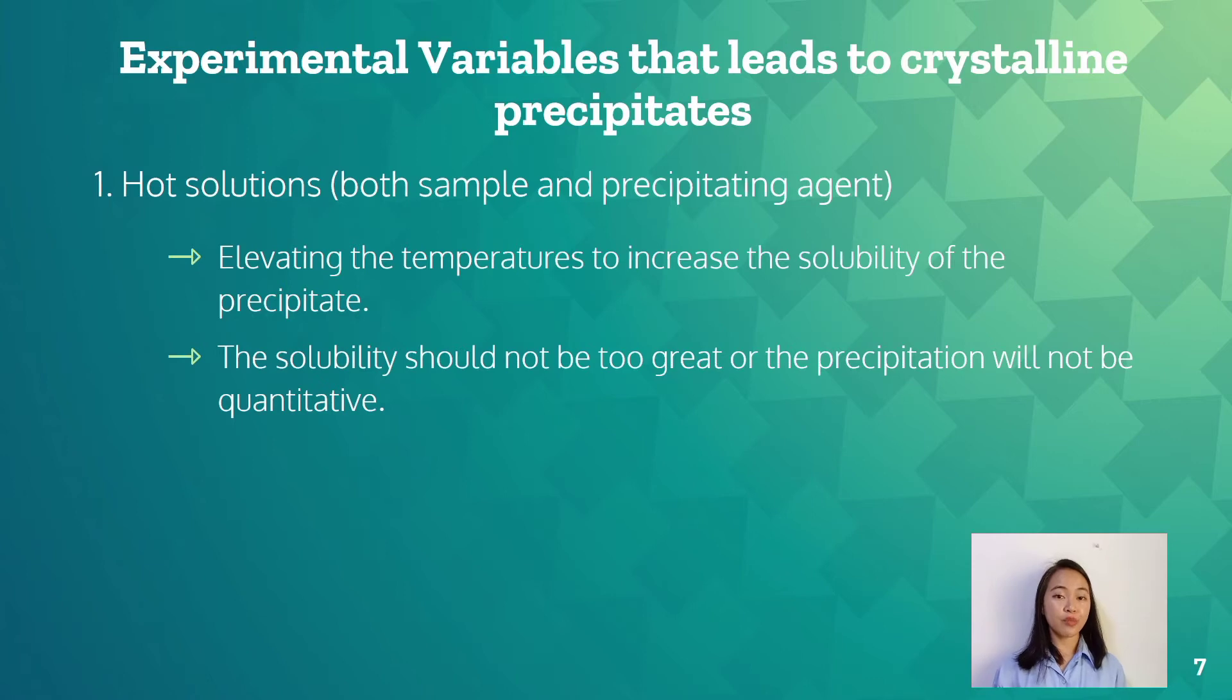The bulk of the precipitation may be performed in the hot solution and then the solution may be cooled to make the precipitation quantitative. As the solubility increases, the temperature also increases. Therefore, the relationships between these two are directly proportional.